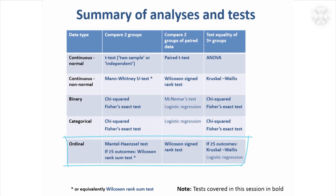For pairs of data the Wilcoxon signed rank test is appropriate — you're just treating the data as ranked rather than categorical. And because you're treating it as ranked you can use the Kruskal-Wallis test if there are five or more outcomes. There's also logistic regression, which is one of the key ways of analysing ordinal data where you can use a model, and as we'll see next time there are potential advantages in doing that.